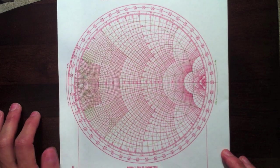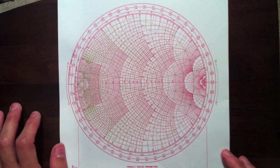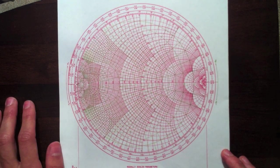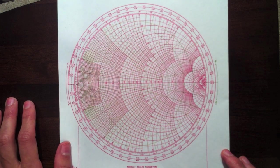Smith charts are used in network analyzers to show the frequency response of an antenna in a vector form as opposed to scalar measurements, which don't give us as much information.